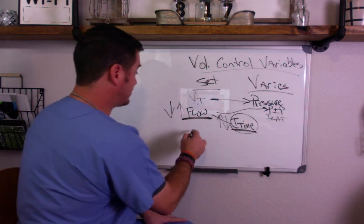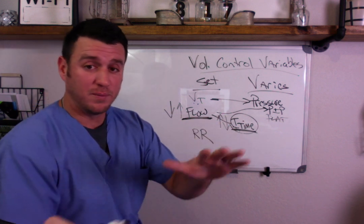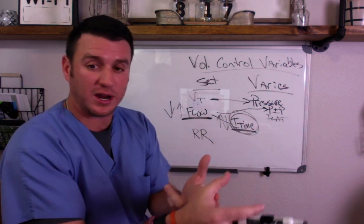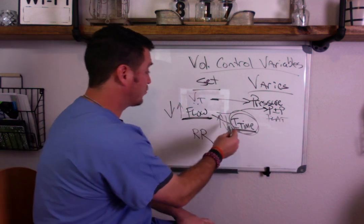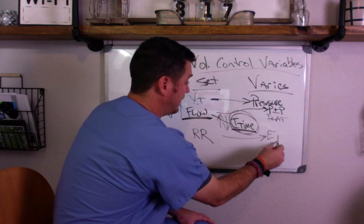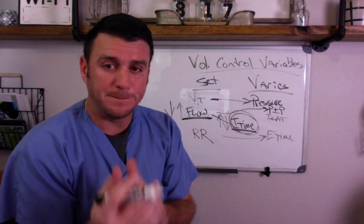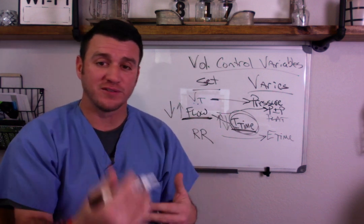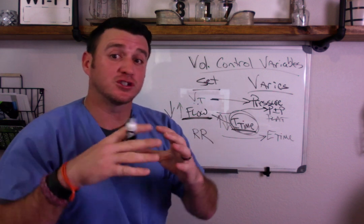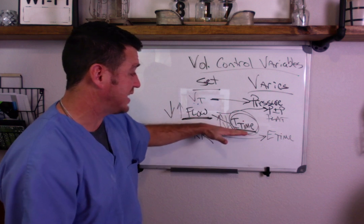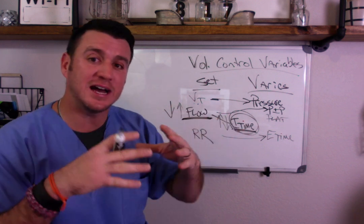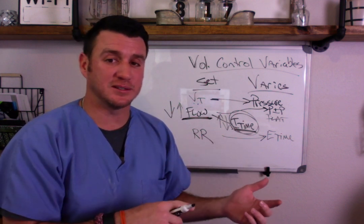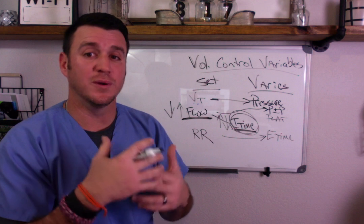Other than those settings, you're also setting a respiratory rate. In volume control, I-time is fixed — either you set it directly or it's a product of flow. Because I-time is fixed, your E-time will vary based off of your patient's respiratory rate. If you're in assist control and the patient is breathing over the ventilator, your total cycle time can become smaller. With a fixed I-time and a smaller total cycle time, E-time is going to vary based off of the patient's respiratory rate. In SIMV this may not be as affected, but in assist control it can be greatly affected.